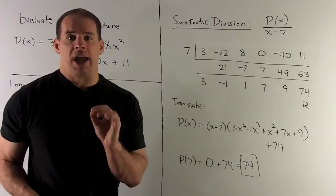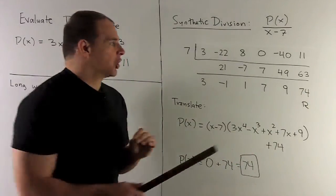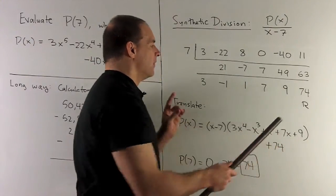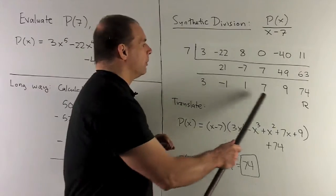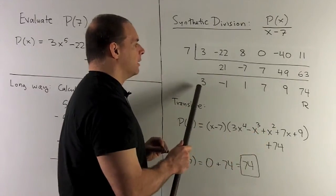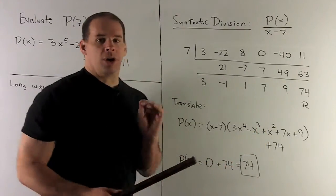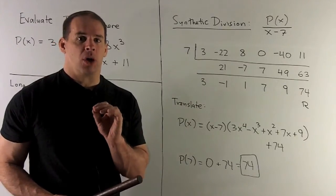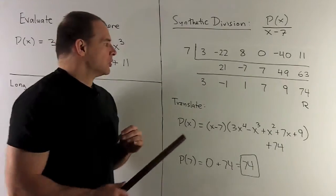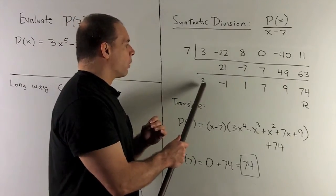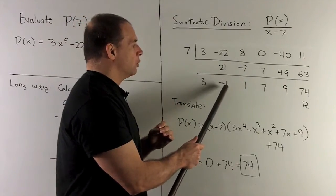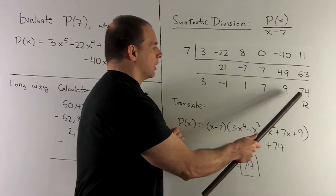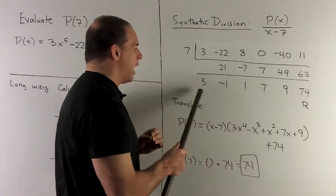So how do we translate? First, the last entry on the last line is going to be a remainder. Then we'll get a polynomial out of the terms in front of it. You start with one degree less than your original polynomial. So original polynomials start with an X to the fifth. So here we're going to have 3X to the fourth minus X cubed plus X squared plus 7X plus 9. So we get a remainder and a polynomial.